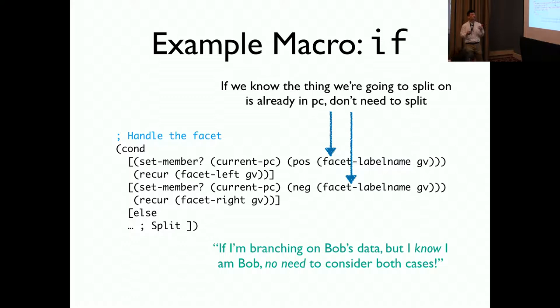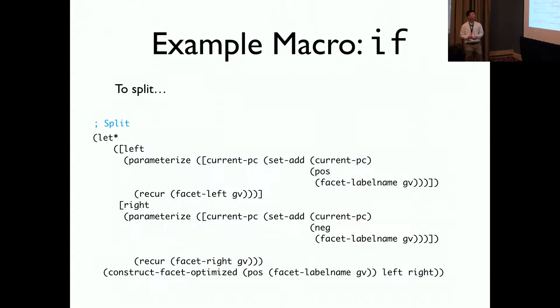First we check if the faceted value's label is in the program counter or not by checking if the label, the positive label or negative label, is a set member of current PC, the program counter. If it is, we evaluate them accordingly. The recurve means we use let loop to recursively evaluate the branches. Otherwise, we split.